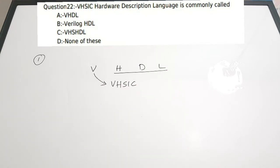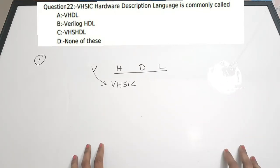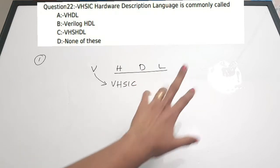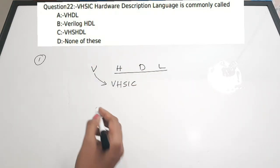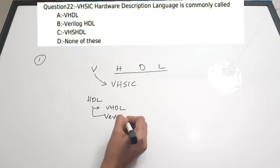VHDL and Verilog are both hardware description languages. In this type of programming we are considering the hardware itself and writing programs for it. In other high-level programming languages we write code and then consider the hardware, but in HDLs we take into consideration the hardware ports first and then write the program. The most commonly used hardware description languages are VHDL and Verilog.